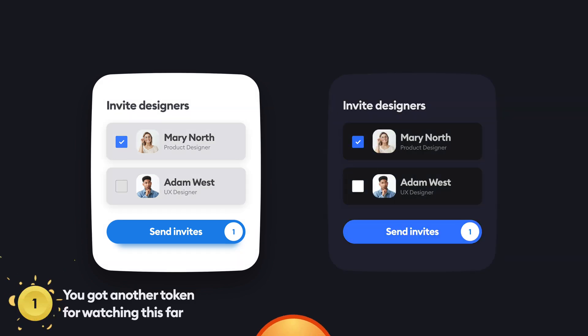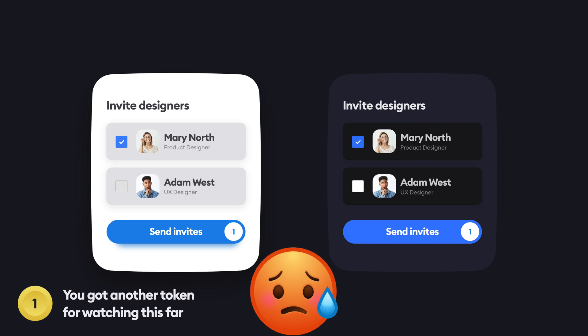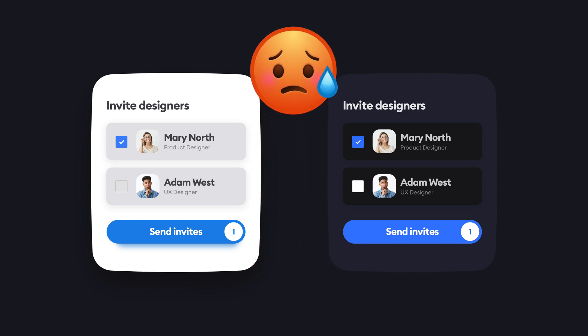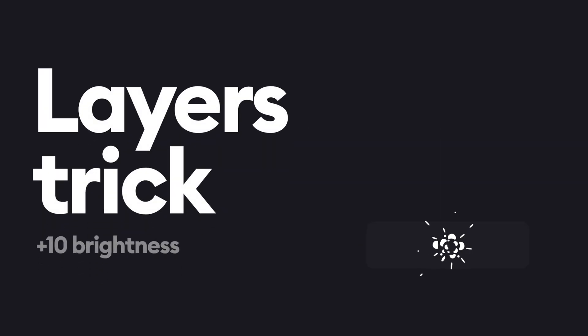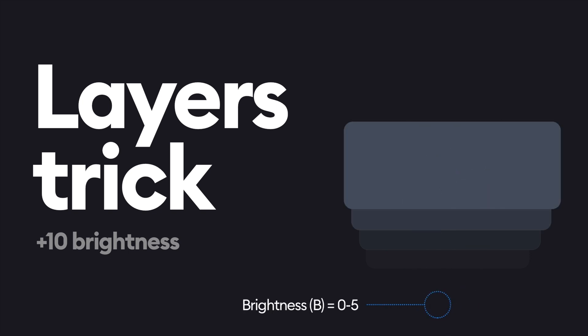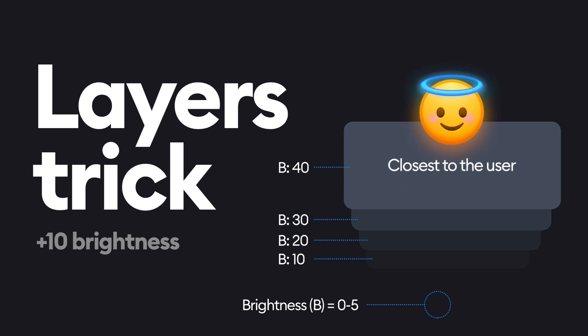If the gradation is broken and the darkest color is on top, we can still use the app, but it just feels weird. The trick I use for those layers is simply adjusting the brightness. Assuming the background has a brightness between 0 and 5, simply start with 10, 20, 30, and 40. In most cases, you only need 3 layers anyway.